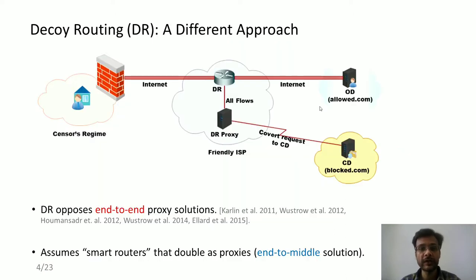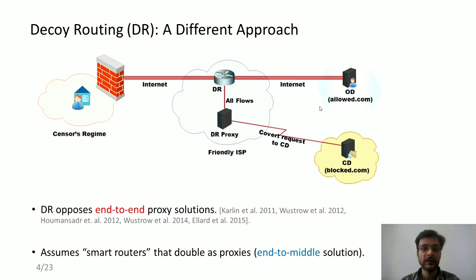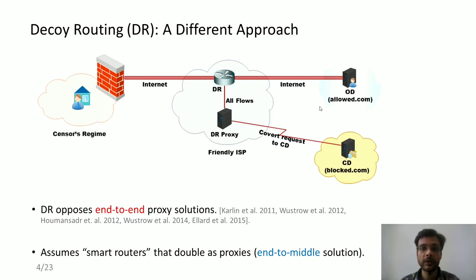Decoy routing is a new approach and it tries to make it very difficult for the adversary to block such a system — that is, even if the adversary knows that such a system is present, it will not be easy for the adversary to completely block it. There are various decoy routing systems which have been proposed, and before going into detail I would like to briefly describe how a decoy routing system generally works.